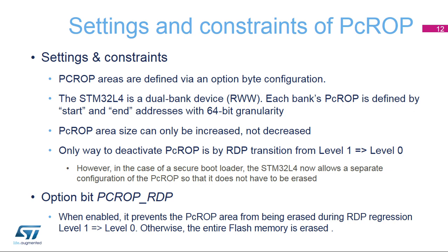To further explain the execute-only meaning of PCROP: PCROP is a substate of RDP. It is designed to prohibit other code executing on the STM32 from reading the flash memory. This is not the same as RDP, where the protection targets the external world. When PCROP is enabled, the AHB only allows the instruction bus to work, so code can only be executed — the data bus cannot access that flash memory.